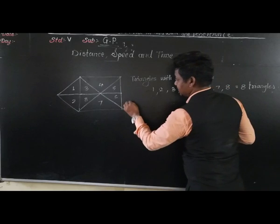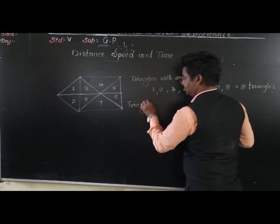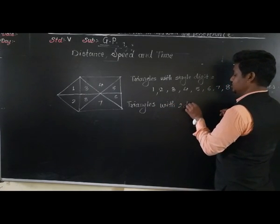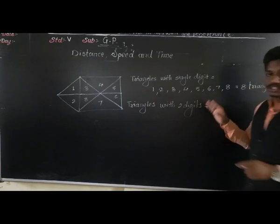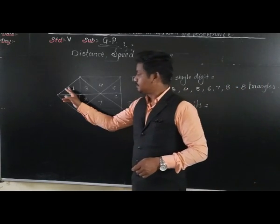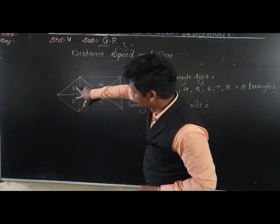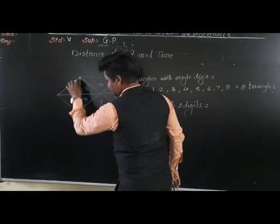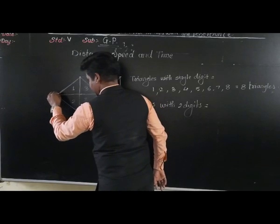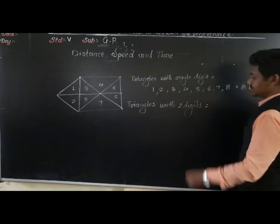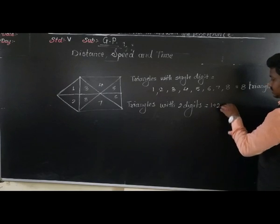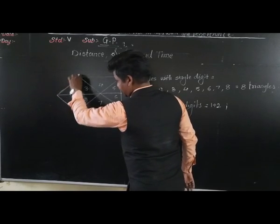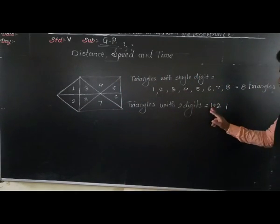Now, triangles with 2 digits taken together. See 1 and 2 together — this part and this part together. Is it a triangle? Yes, it is a triangle. So 1 plus 2 together makes 1 triangle. Then 1 plus 3 — together, is it a triangle? Yes, 1 plus 3.